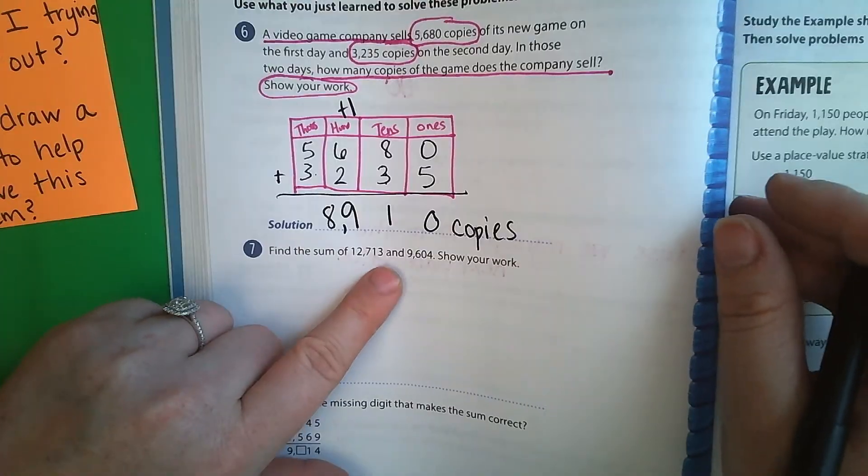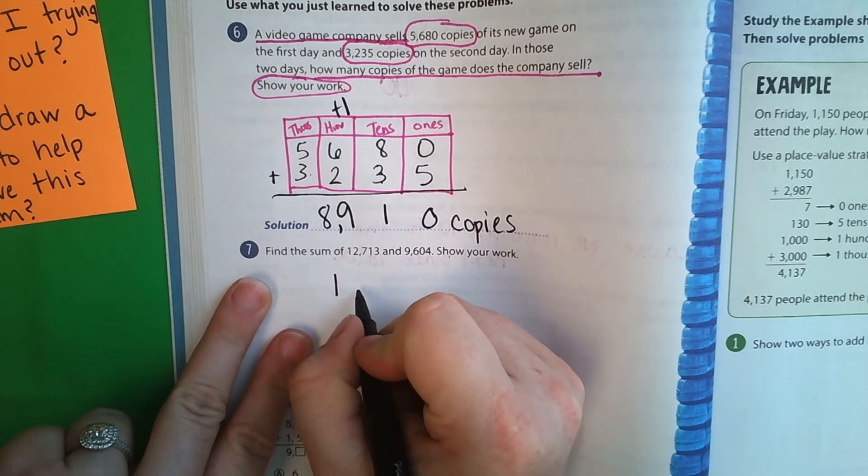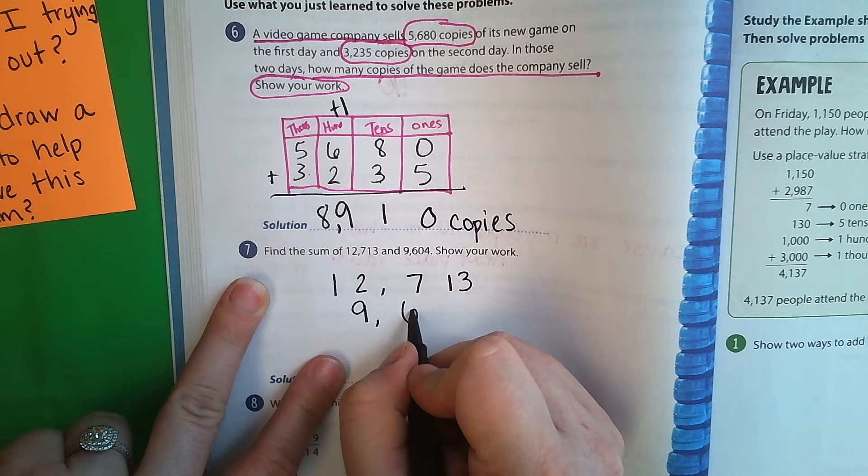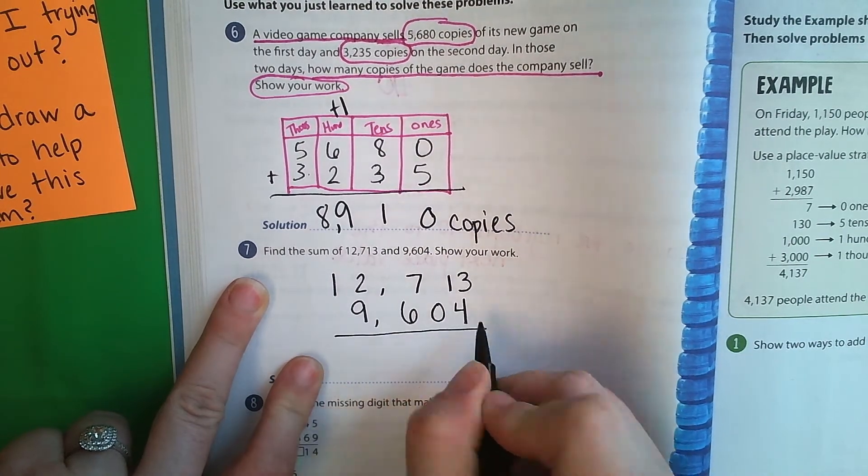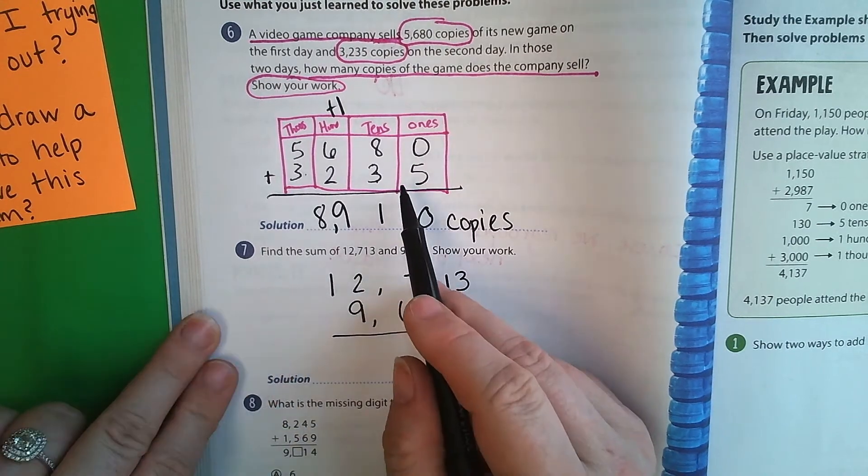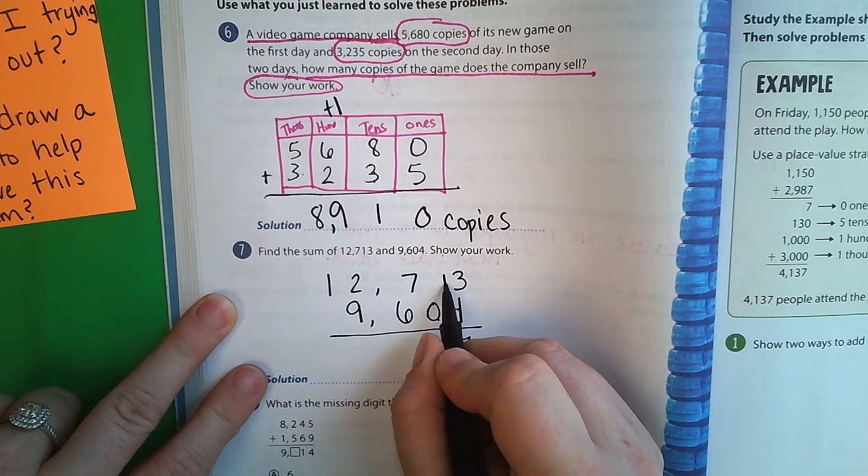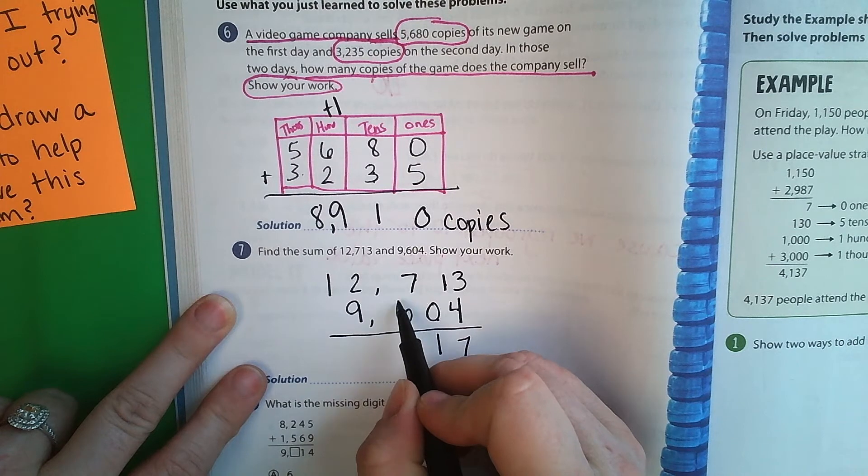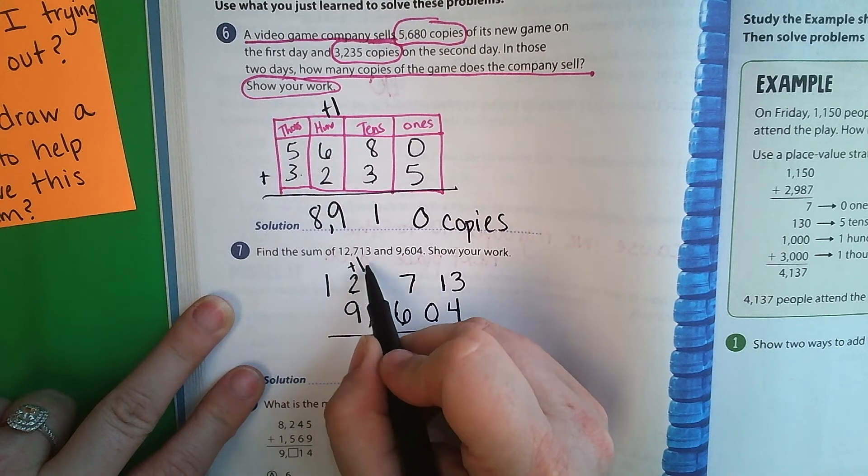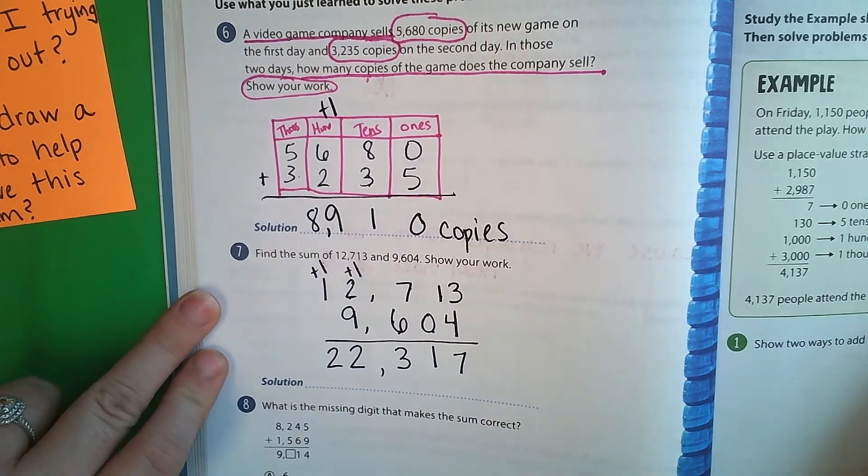Next, find the sum of 12,713 and 9,604. Show your work. So if you were comfortable where you can line these numbers up, you do not have to do this in a place value chart. But if you were still struggling with keeping those numbers lined up, see like this right here, I didn't even get that one lined up very well, then it would be wise to go ahead and make that place value chart. 4 plus 3 is 7. 0 plus 1 is 1. 7, 8, 9, 10, 11, 12, 13. Carry that 1. 9, 10, 11 plus 1 more is 12. Carry another 1. 1 plus 1 is 2. And that's how I got my answer.